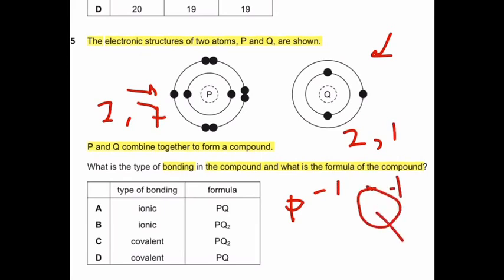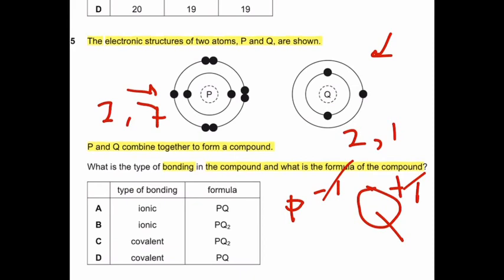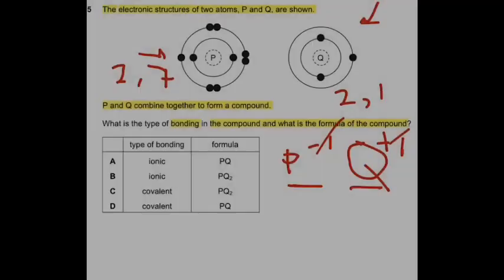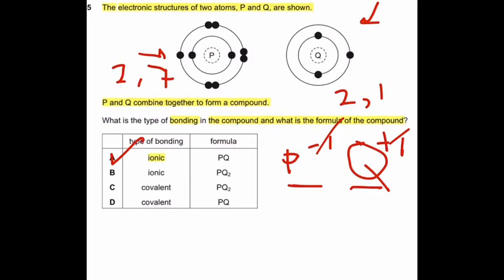As their valencies are same so they will be cancelled out because valencies are balancing each other. And it shows that P is non-metal and Q is metal, metal from group 1 and P is non-metal from group 7. So type of bonding that exists between metal and non-metal is ionic and formula will be PQ.